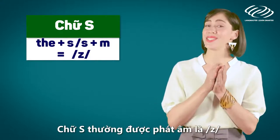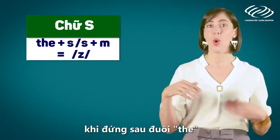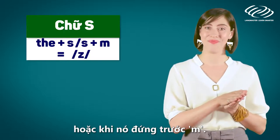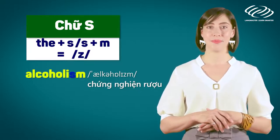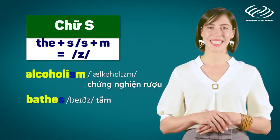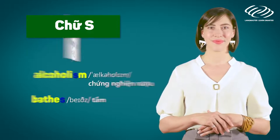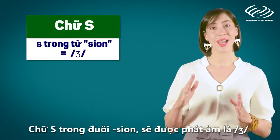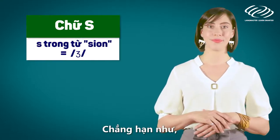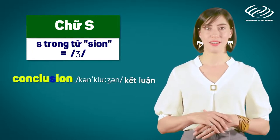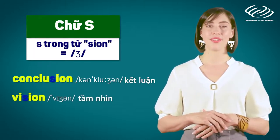The letter S is also pronounced as /z/ when it comes after TH or before N. For example: alcoholism, bathes. The letter S in the suffix -SION is pronounced as /zh/. For example: conclusion, vision.